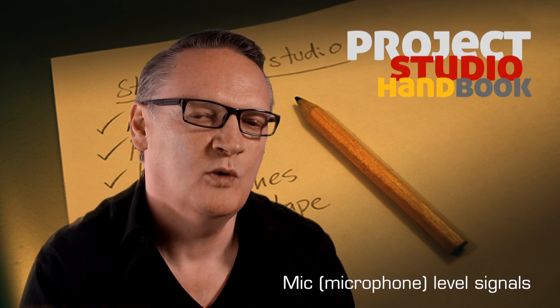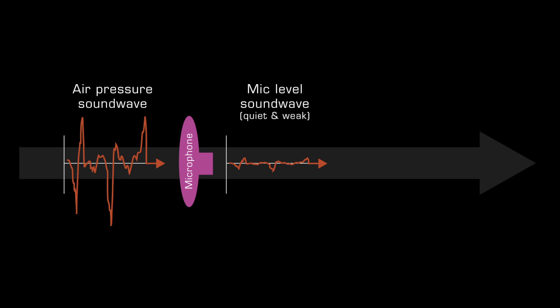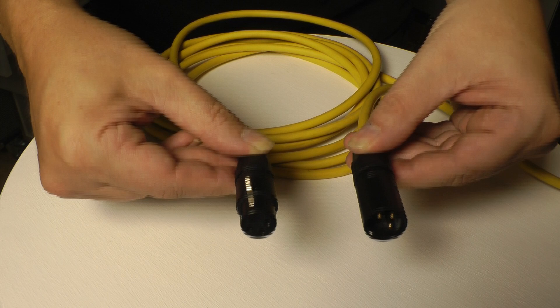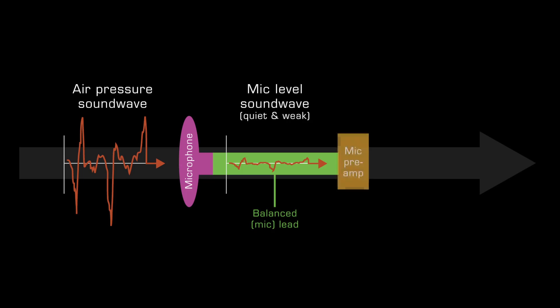Microphones, which are also referred to as mics, produce very quiet electrical pressure sound waves which must be protected from interference by a balanced cable arrangement as they travel to a microphone pre-amplifier.